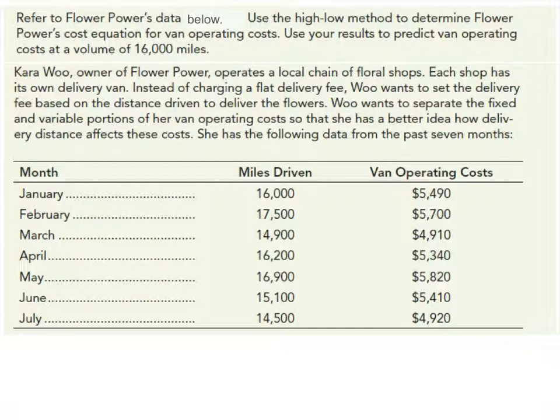So to talk about the high-low method let's just jump right into an example here. So we're going to use the high-low method to determine Flower Power's cost equation for van operating costs. We're going to use those results to predict van operating costs at a volume of sixteen thousand miles. So Kara Wu, the owner of Flower Power, operates a local chain of floral shops.